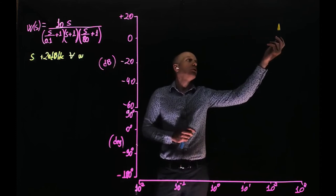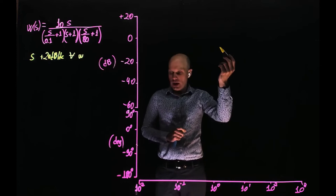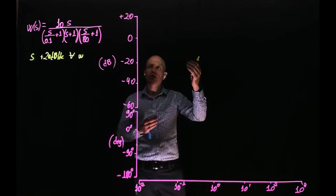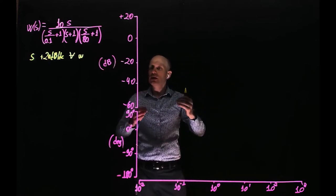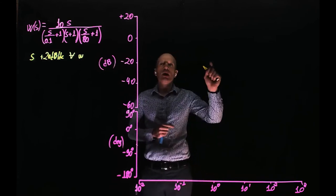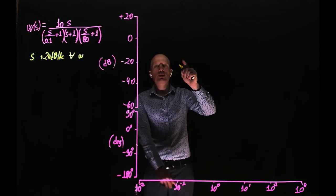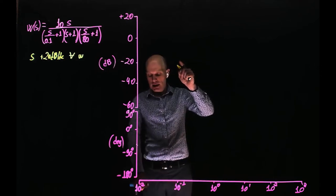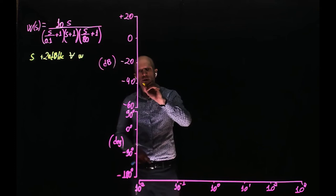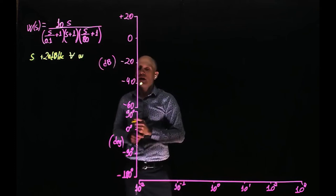And if you increase the frequency by another factor of 10, we go to 40 dB. What happens if we decrease the frequency? Well, if we decrease the frequency, the Bode plot decreases. At 1 radian per second, we are at zero. At 0.1, we should be at negative 20, and at 10 to the power of negative 2, we should be at negative 40. So the Bode plot starts around negative 40 dB.